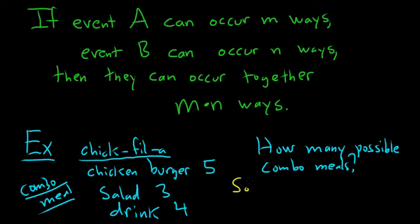Solution. Obviously, we're talking about the multiplication rule, so you're going to multiply. But let's overthink it. There are three steps in the construction process of a combo meal. The first step is to pick a chicken burger. The second step is to pick a salad. And the third step is to pick a drink.